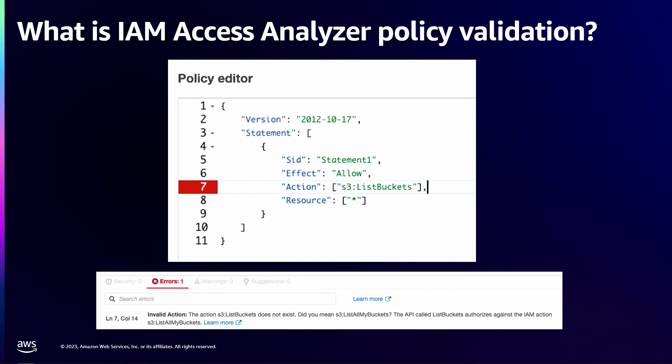There's actually an API for policy validation called Validate Policy. Even if you've never programmatically called that API, you've probably used policy validation if you've used the policy editor in the AWS console. What you see at the bottom of the editor is Access Analyzer policy validation running in real time as you edit your policy — telling you what's right and wrong. In this case, it's telling me that S3 ListBuckets doesn't actually exist; the real action is S3 ListAllMyBuckets. You can see the types of things that policy validation can surface if we put it in front of our deployments.